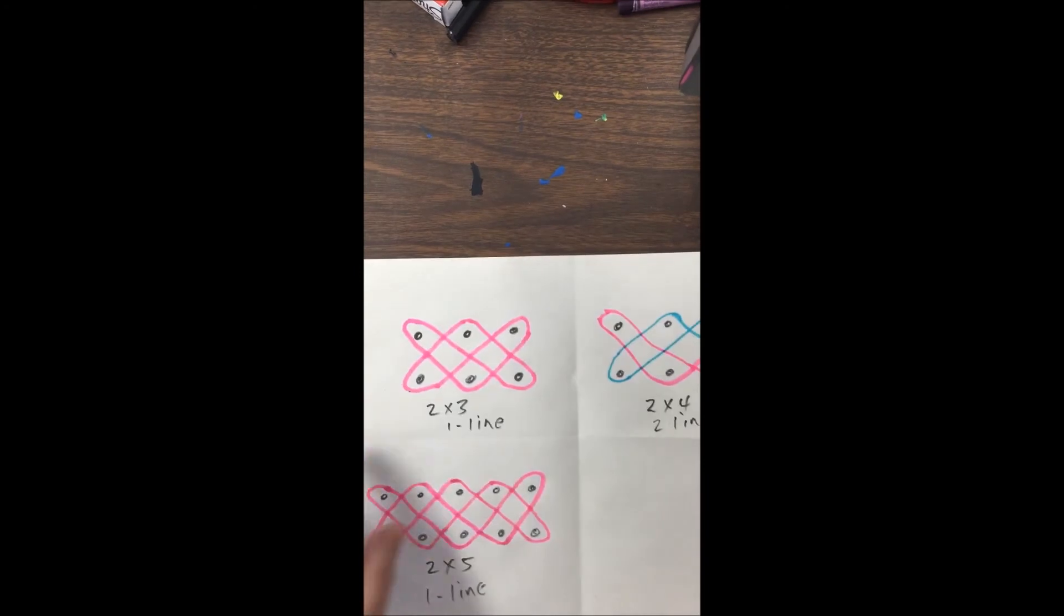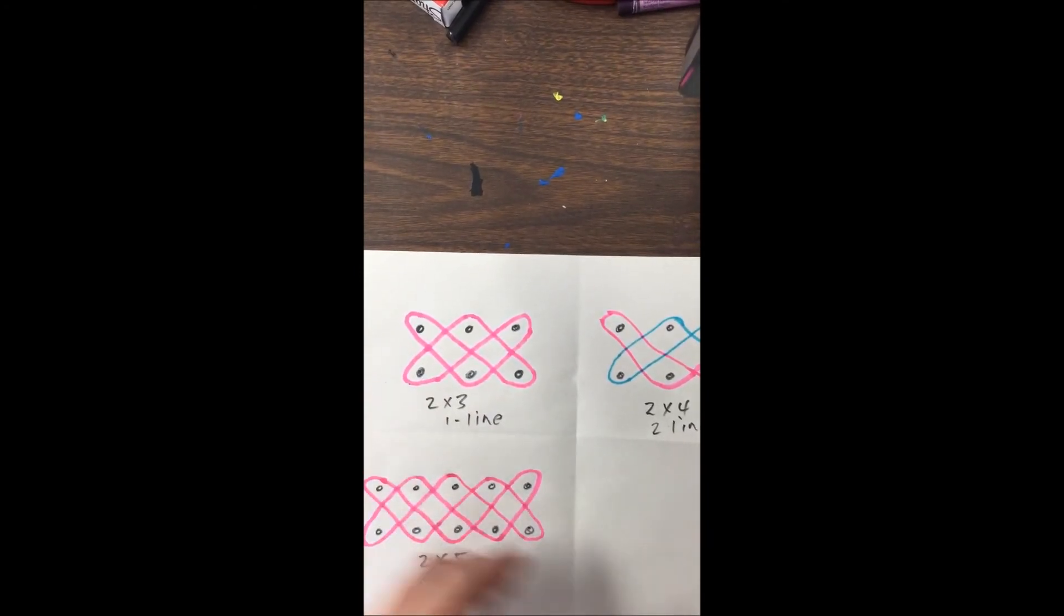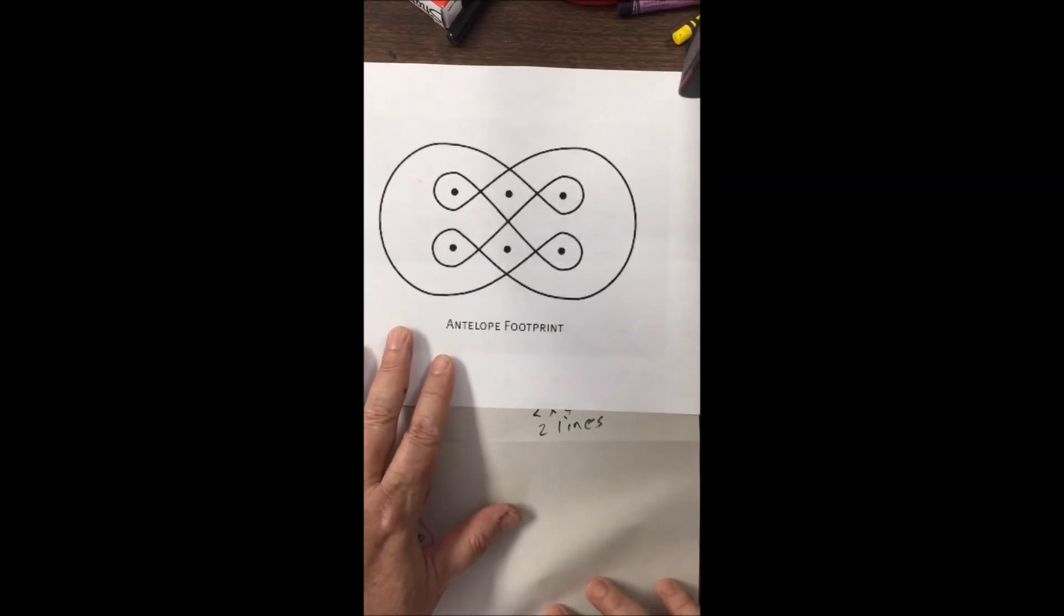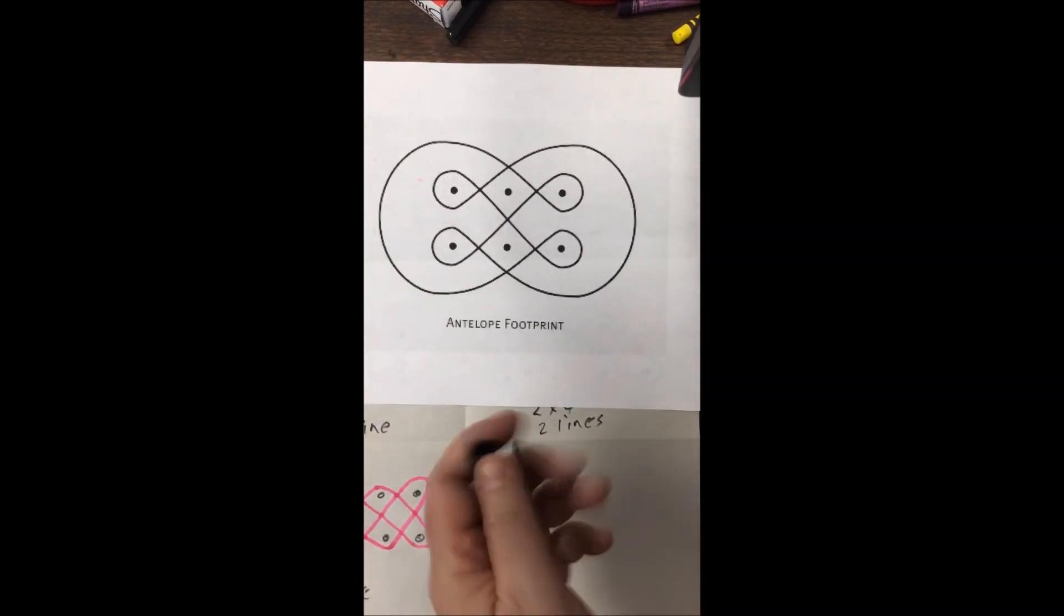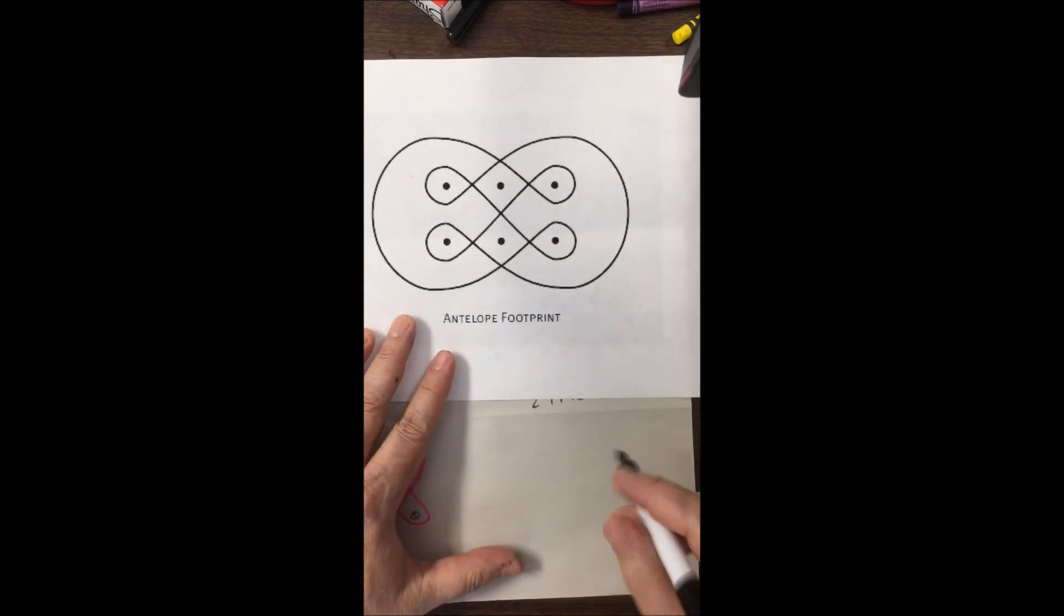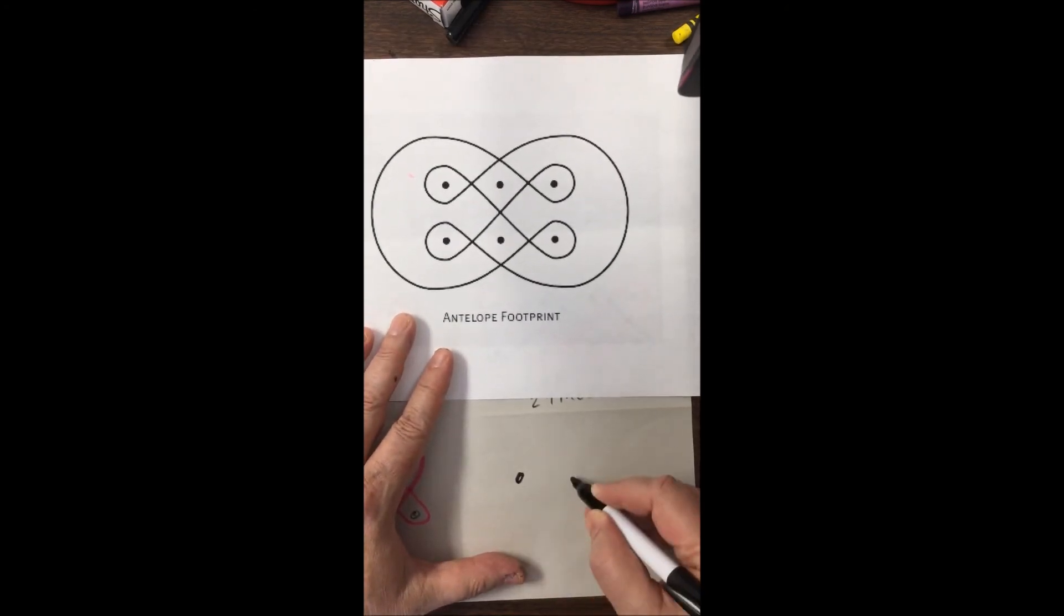Last one I'm going to do is a two by three, but it's a different design. This is a so-called antelope footprint. So it's good to take a look at it before you start and to use the example as you do it. So it's a two by three, so I'm going to start with my three dots evenly spaced. One, two, three. Copy underneath. One, two, three.